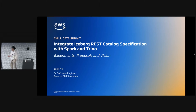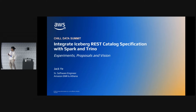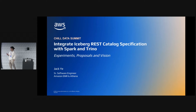Today the topic is about integrating the REST catalog specification with Spark and Trino. Just a little bit of explanation about the title: when I talk about integration, the current integration so far is mostly contributed by Tabular and others to Spark and Trino. So we are mostly verifying and experimenting about the integration, and we are currently proposing new changes that I'm going to talk about.